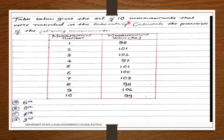The next problem: the table below gives a set of 10 measurements recorded in the laboratory for some random experiment. Measurements 1 through 10 have values x_n: 98, 101, 102, 97, 101, 100, 103, 98, 106, 99. These are 10 values recorded in the lab — taken 10 times. We have to calculate the precision of the following measurements.